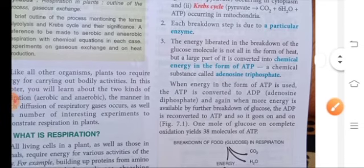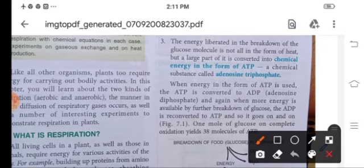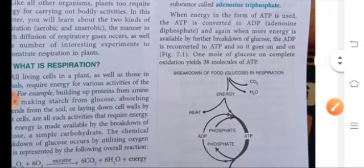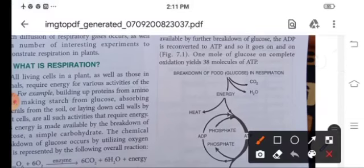Now when energy is in the form of ATP, it is converted to ADP when it is not in use. And whenever this energy is required, again the energy is available by further breakdown of glucose and this ADP is reconverted to ATP and the process goes on. So one mole of glucose molecule on complete oxidation gives 38 molecules of ATP.